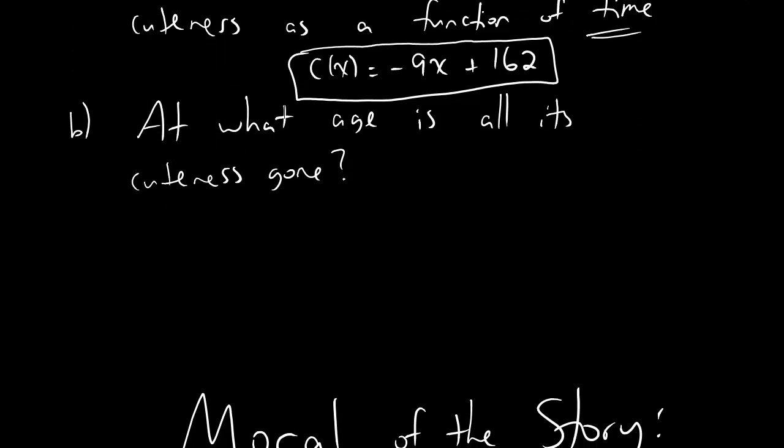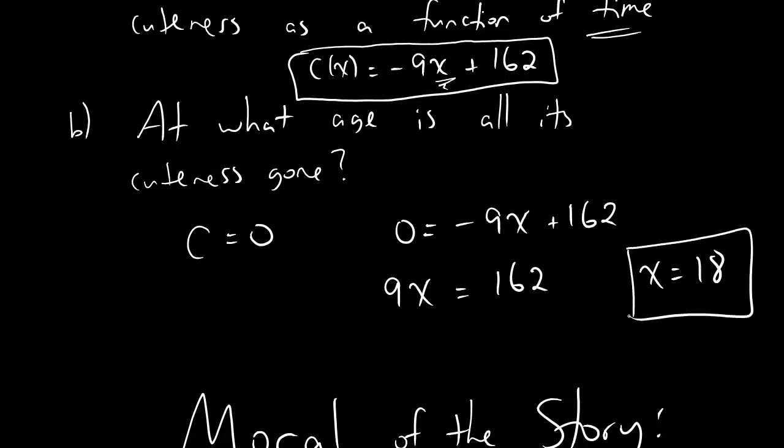Well, if all the cuteness is gone, obviously, obviously people, that means that cuteness equals 0. So really what we're asking is, what is the time value, what is the x value, where c equals 0? That means we're looking for this equation. We set c equal to 0, and we solve. Let's move the 9x over. 9x becomes positive now, equals 162. And then divide by 9, and you get x equals 18. Hey, what a coincidence! At age 18, all of your cuteness is gone. Well, that's just tragic. Guess that means you better learn some math, or else you ain't worth much in this world, are you? Age 18, all downhill from there.